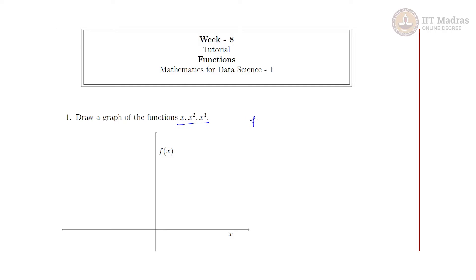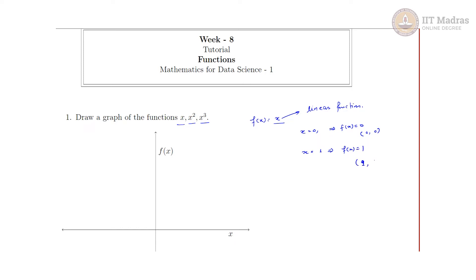First is f(x) = x. What comes to mind is that this is a linear function, so it will represent a line. To draw a line we need two points. If x equals 0, f(x) equals 0, so my point is (0, 0). If x equals 1, f(x) equals 1, so the point is (1, 1).